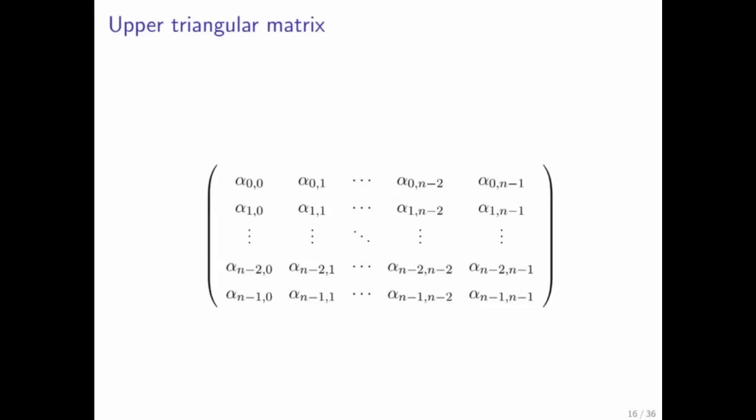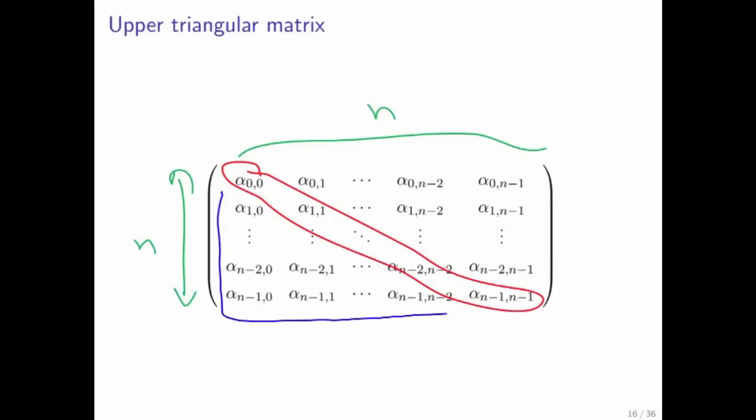So what is an upper triangular matrix? Well, first of all, the matrix has to be square. So here we represent an N by N matrix. Let's highlight the diagonal elements. Now, an upper triangular matrix has the property that all of the elements below the diagonal are equal to zero.